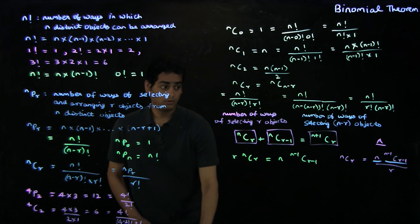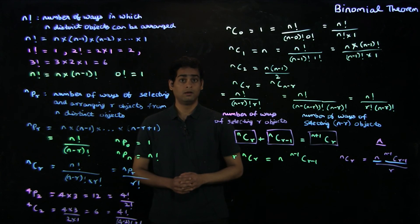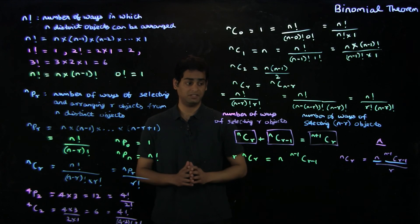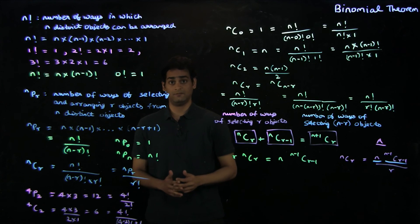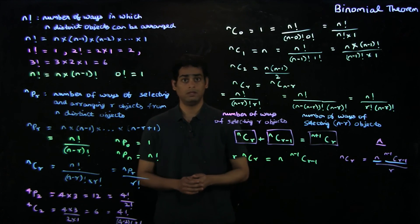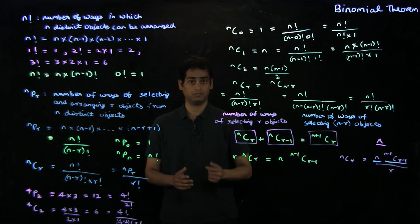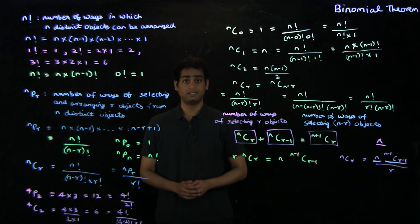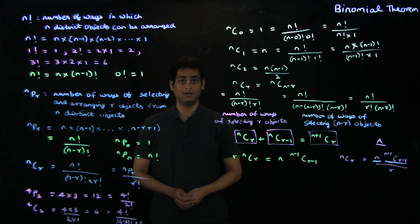There are several more identities which you can derive based on the definition of nCr, but in this lecture these are all the definitions we'll be looking at. If you're not yet familiar with nCr and nPr, I refer you to the lectures on permutations and combinations in this series. In the next lecture, we will be looking at the binomial theorem and its applications. So that's it for this lecture. Thank you.